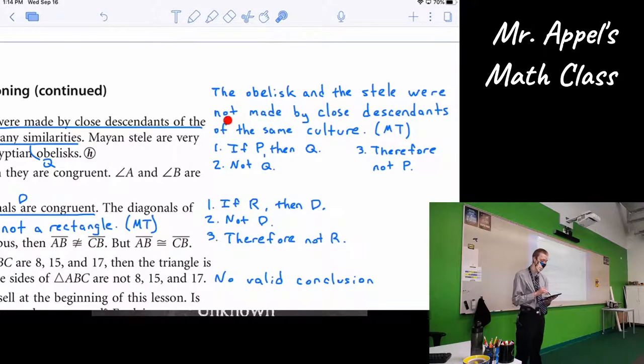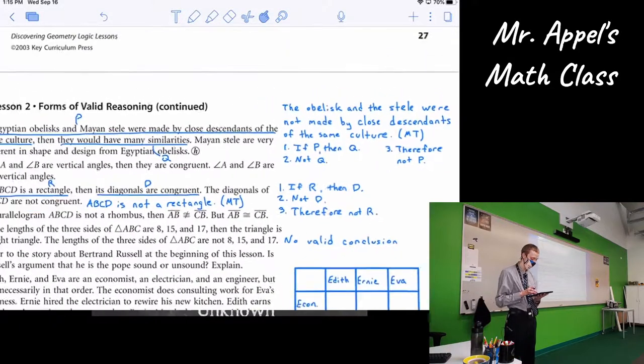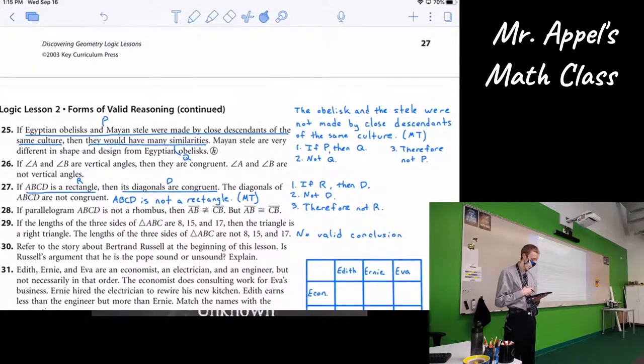The obelisk and the stele were not made by close descendants of the same culture. They are too different to be an excuse for uniting these people together. All right.